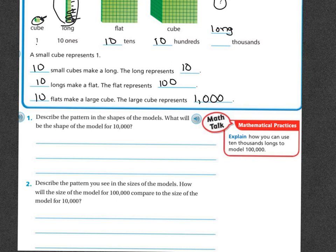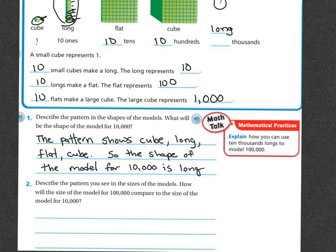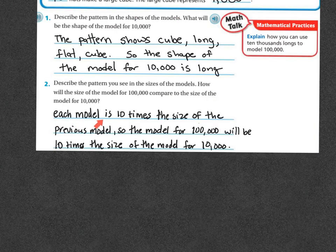Describe the pattern in the shape of the models — what will be the shape of the model for ten thousand? The pattern showed cube, long, flat, and cube, so the shape of the model for ten thousand is long. Instead of pretending the cube is one, you're going to pretend the cube is a thousand, and so then a long would be ten thousand because there would be ten of them. Each model is ten times the size of the previous model, so the model for a hundred thousand is going to be ten times the size of the model for ten thousand.